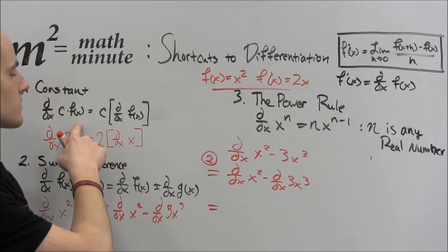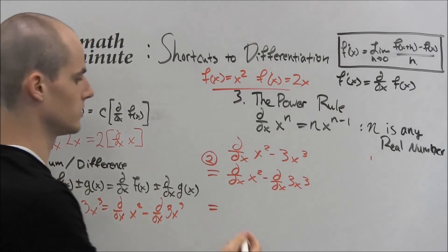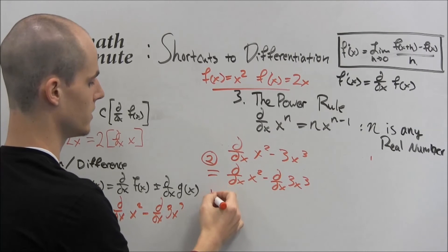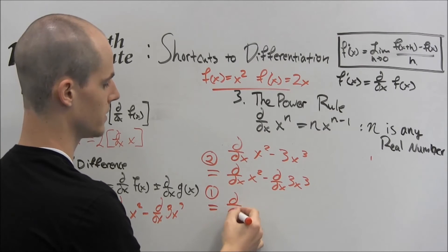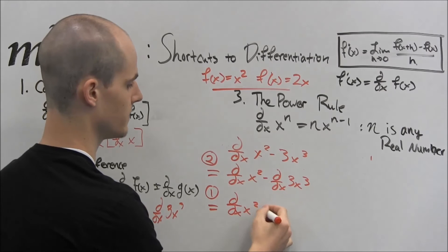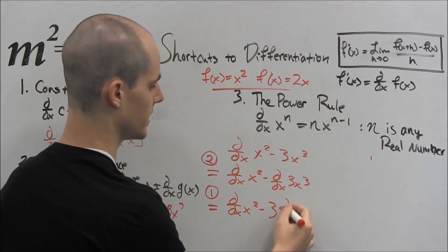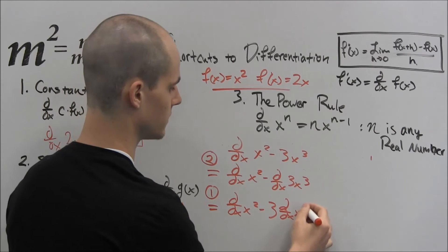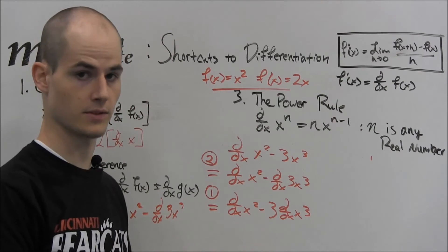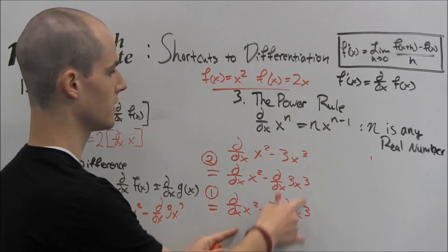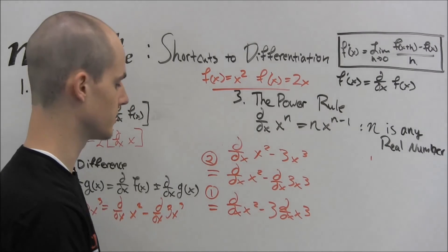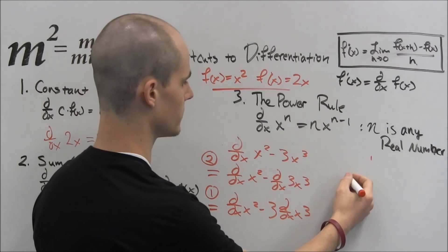So the other rule says, rule number 1 is the constant rule. So we can take this 3 out. So rule number 1, the first part stays the same and we can take that 3 out. Now what this is, if you've noticed, these are just the power rule. So now we can actually take the derivative. So let's write this over here.